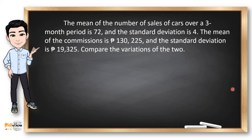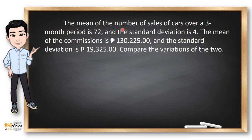Let's have this example. The mean of the number of sales of cars over a three-month period is 72, and the standard deviation is 4. The mean of the commission is ₱130,225, and the standard deviation is ₱19,325. Compare the variations of the two. Since we are comparing two measures with different units, we will use coefficient of variation.